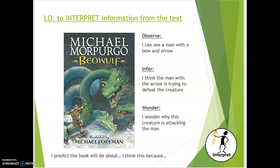So I've got: 'I think the man with the arrow is trying to defeat the creature.' Then anything that you wonder about the book, using the sentence starter 'I wonder why this creature is attacking the man.' Once you've finished those sentences — maybe doing three or four for each — you can think more widely about what you think the book is going to be about, using the sentence starter 'I predict the book will be about...' Tell me what you think it will be about and then explain why you think that.